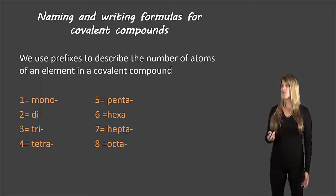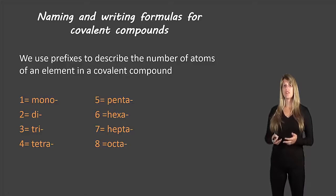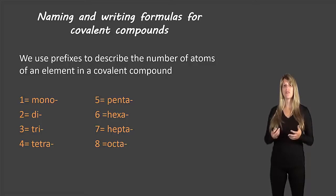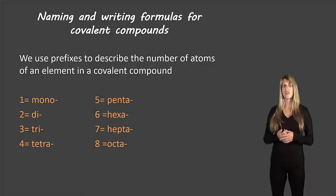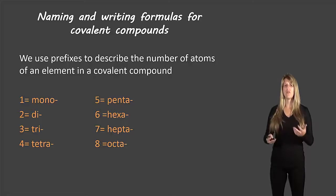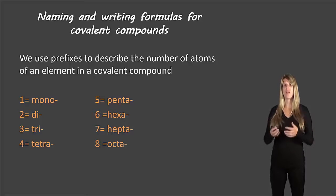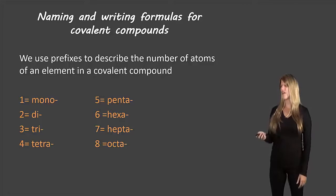Now for naming and writing formulas for covalent compounds, we use prefixes to describe how many of each type of element are inside the compound. I've written the list of prefixes that we use. Make sure you write these in your notes so that you know exactly which prefix to use when dealing with different numbers of atoms inside the compound.